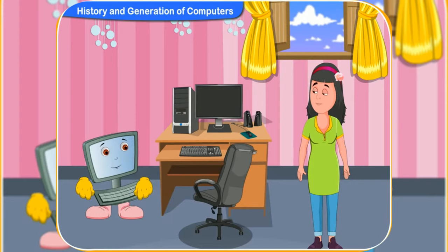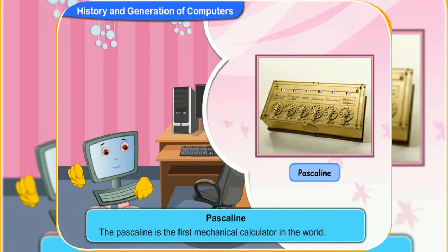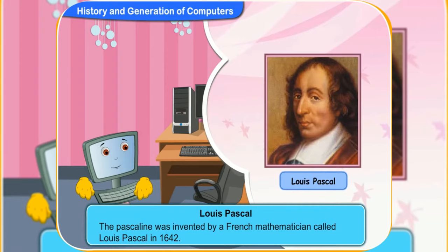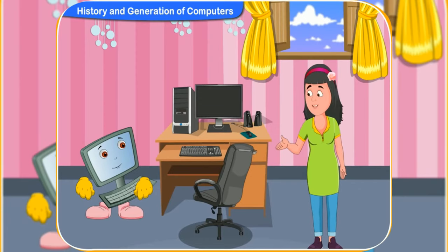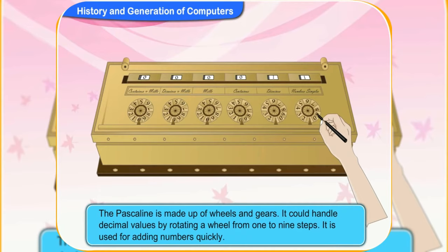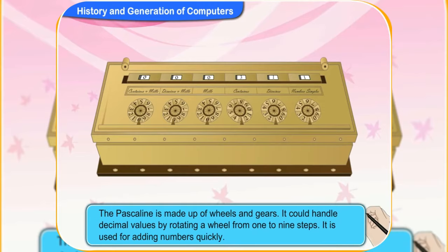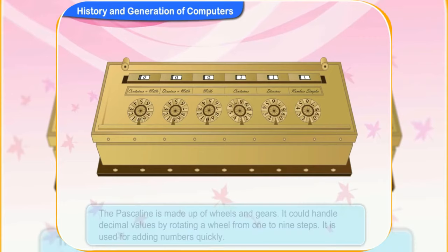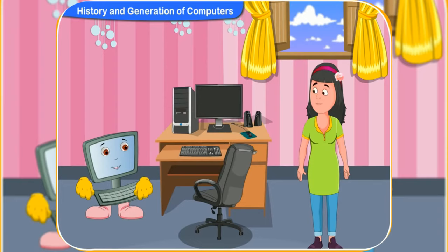Let us now discuss the pascaline. What is it? The pascaline is the first mechanical calculator in the world. It was invented by a French mathematician called Blaise Pascal in 1642, and so it is named after him. The device is made up of wheels and gears. It could handle decimal values by rotating a wheel from one to nine steps, and is used for adding numbers quickly. The meters used in taxis nowadays are an example of the pascaline.